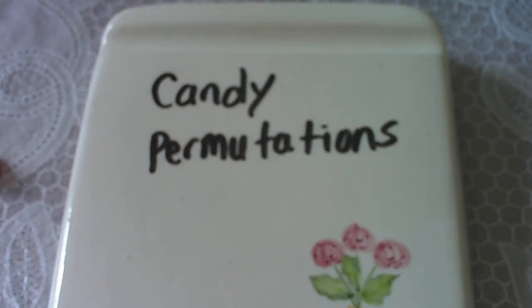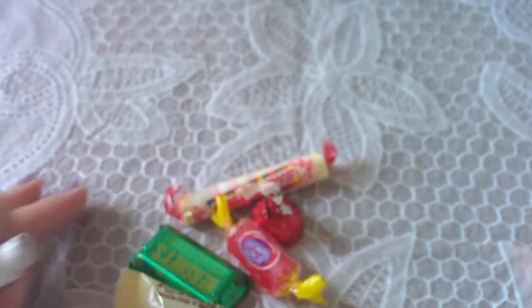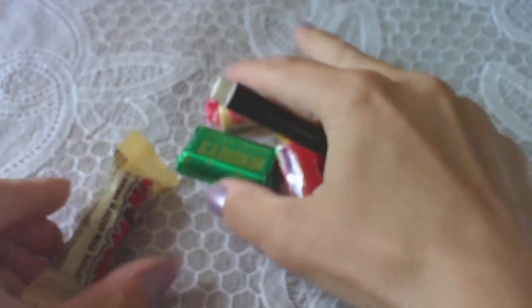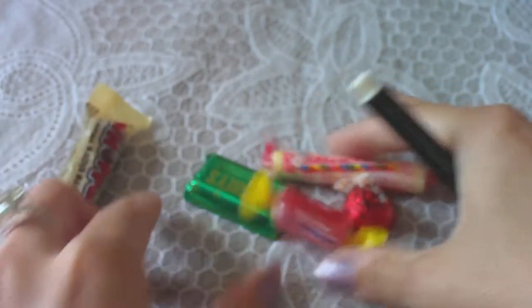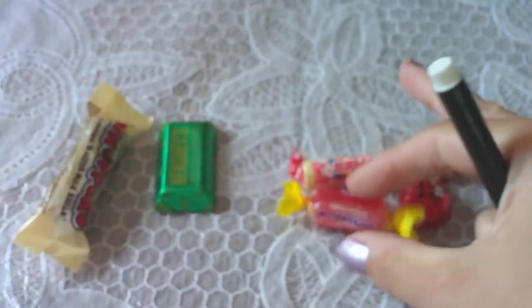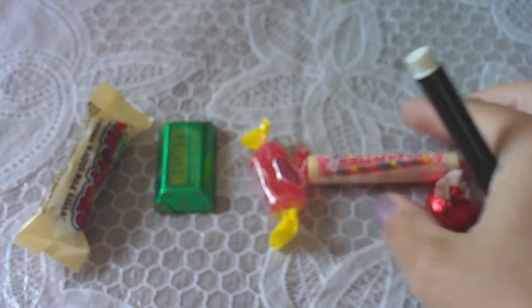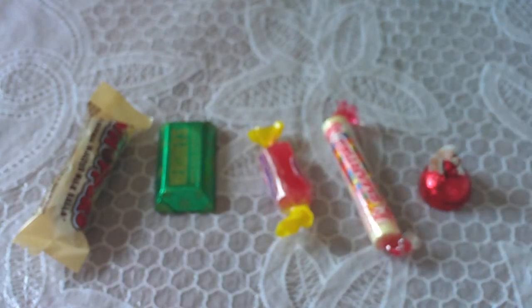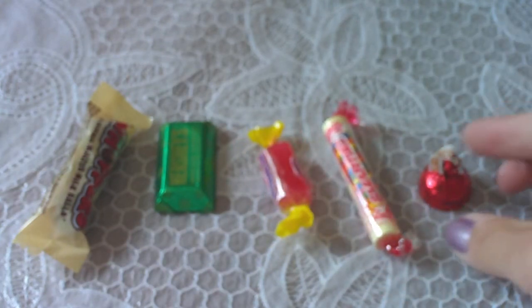This problem is called candy permutations. Let's say you were about to choose which Halloween candy you were going to have first. One way to do it is you could make an organized list. You could say, okay, I could have the Whopper first, then the Hershey, then the Jolly Rancher, then the Smartie, and then the Hershey's Kiss.